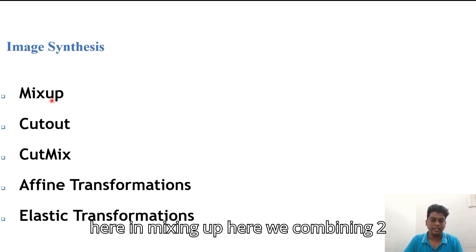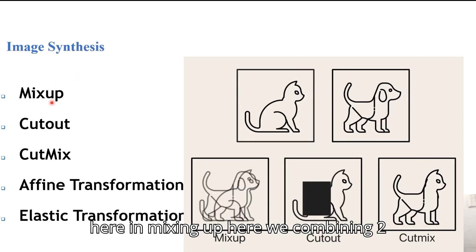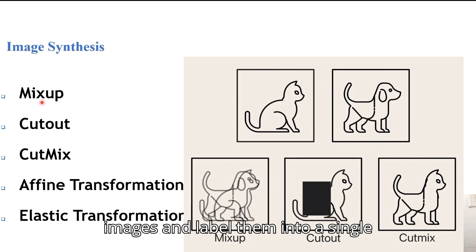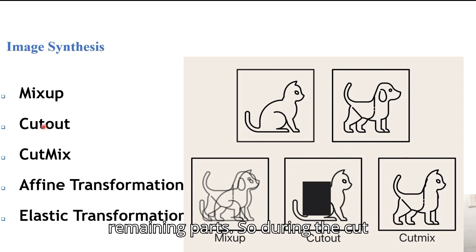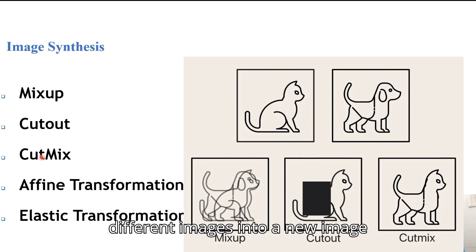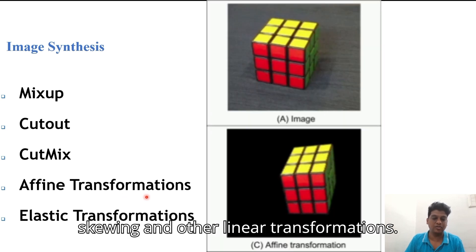Image synthesis techniques include mixup, where we combine two images and their labels into a single image. In cutout, we mask out random sections of the image, which forces the model to focus on the remaining parts. During CutMix, patches from different images are combined into a new image and the labels are adjusted. Other types include affine transformations and elastic transformations, which include skewing and other linear transformations, as well as simulating non-rigid deformations.